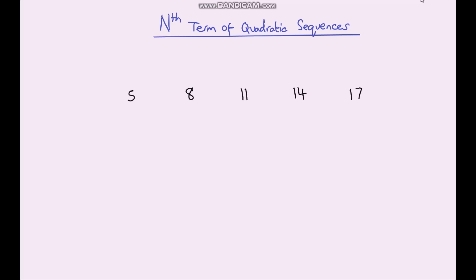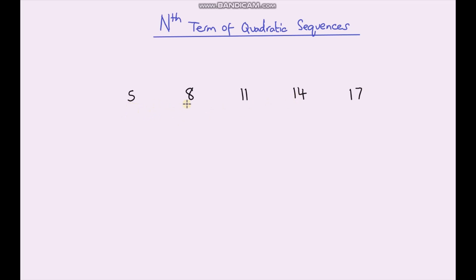Hello and welcome to a video on quadratic sequences. In this video we're going to carry on from where we left off with arithmetic sequences and move on to finding the nth term of quadratic sequences. Before we start, let's have a recap of how to find the nth term of an arithmetic sequence. Here we've got an arithmetic sequence, and the reason I know it's arithmetic is because the difference between each term is the same — we're going up by 3 each time.